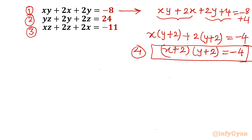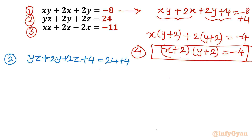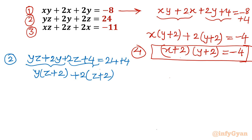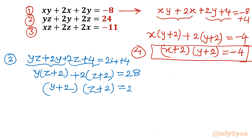Now I will apply the same operation to equation number 2. I write yz plus 2y plus 2z plus 4, and add 4 to the right-hand side as well: 24 plus 4. From the first two terms y is common, giving y(z plus 2), and from the last two terms 2 is common, giving 2(z plus 2). Right-hand side is 28. So z plus 2 is common, giving (y plus 2)(z plus 2) equal to 28. This is equation number 5.